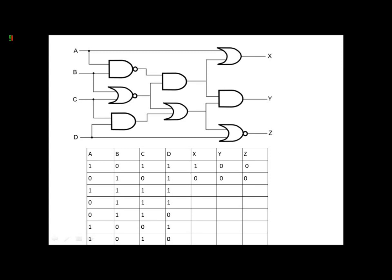For this one, X would be 1 as A is 1. B and C are both 1, so that would be 0, meaning Y would have to be 0. And Z would also have to be 0 as D is 1.